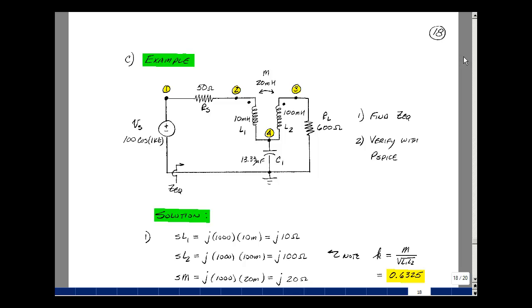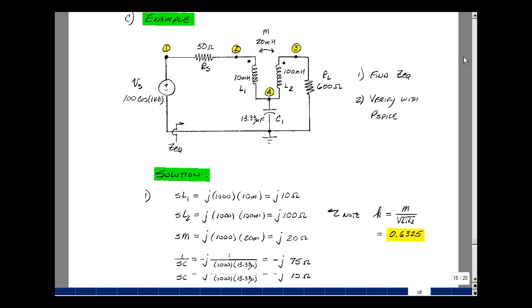Here we have an S-domain model for the transformer, and we can convert that into a phasor problem by substituting in S equals J omega. So given that we have a frequency of 1,000 radians per second, let's find the impedances of L1, L2, and C1, and also of the mutual inductance M. So SL1 then would be J omega L1, and that's 1,000 times 10 millihenries, and that gives me J 10 ohms.